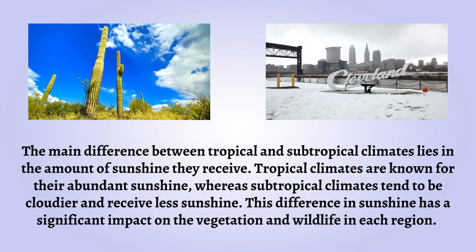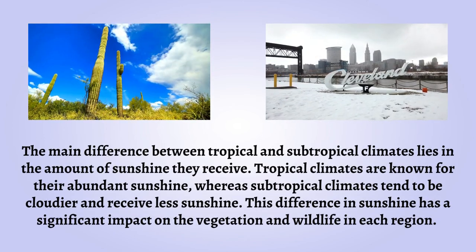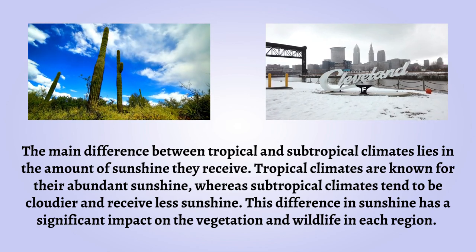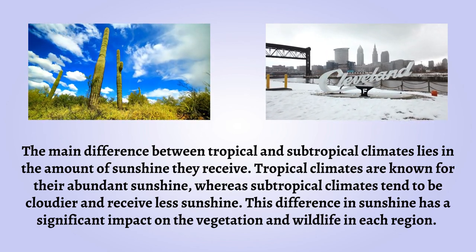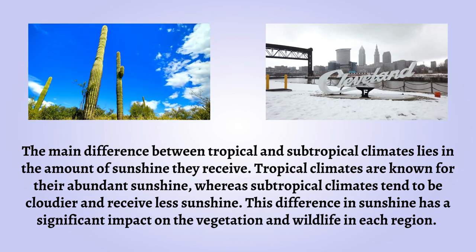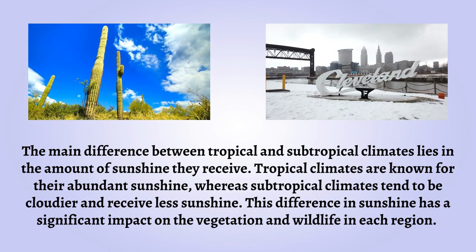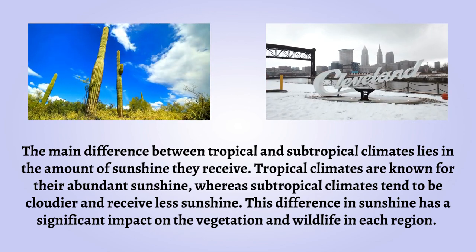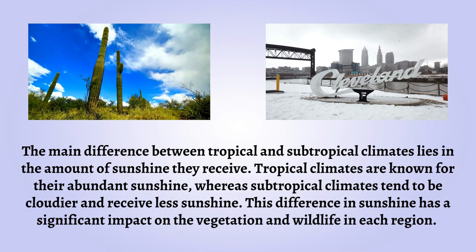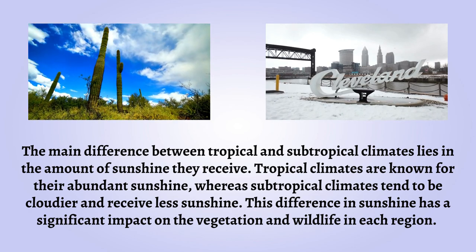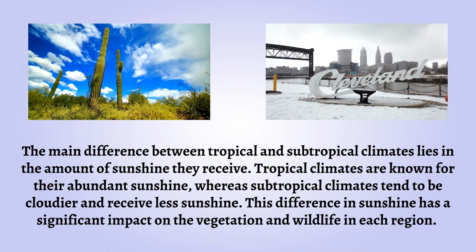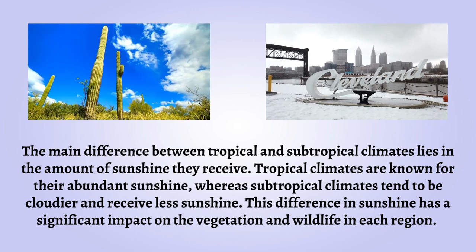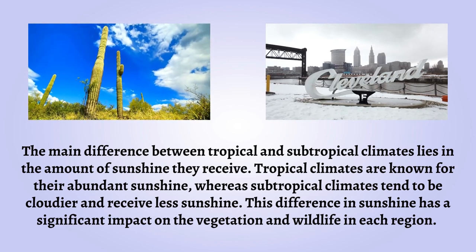The main difference between tropical and subtropical climates lies in the amount of sunshine they receive. Tropical climates are known for their abundant sunshine, whereas subtropical climates tend to be cloudier and receive less sunshine. This difference in sunshine has a significant impact on the vegetation and wildlife in each region.